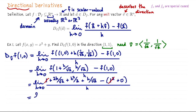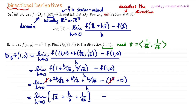So this will be the limit as h goes to zero of 2/√2 — which is just √2 — plus h/2, plus 1/√2. Now we let h go to zero, and we get a total of 3/√2. So that's the directional derivative of f from the point (1, 0) moving in the direction indicated by (1, 1).